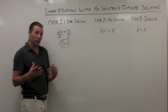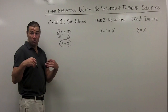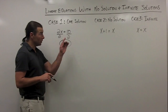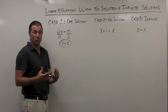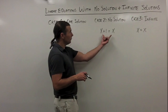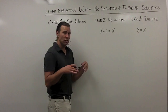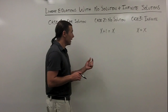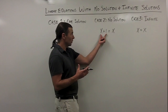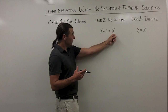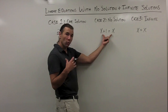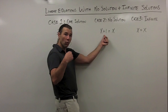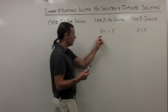It might surprise you that there are equations out there that have no solutions, and also equations that have more than one solution. Let's take a look at case 2 — no solution. I've made a really simple equation here so it's easy to see it isn't going to have a solution. On the left side I have x plus 1, and on the right I have x. This is not going to work no matter what value of x I plug in, because the left side is always going to be 1 larger than the right side.